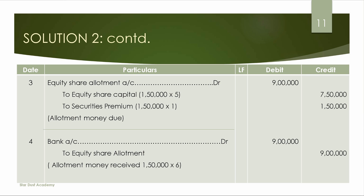On allotment: Bank account Dr. to Share Allotment account. Share allotment is 9 lakhs — that is 1,50,000 shares into 6 rupees. Share capital is 1,50,000 into 5 = 7.5 lakhs, and premium is 1,50,000 into 1 = 1.5 lakhs. The amount received is complete in the bank account and share allotment is complete.